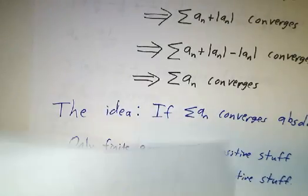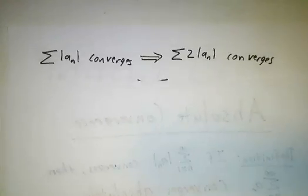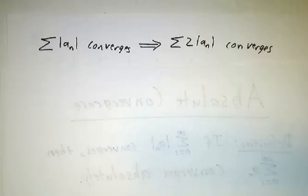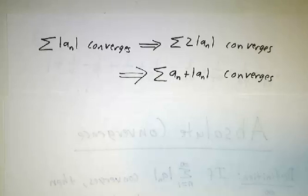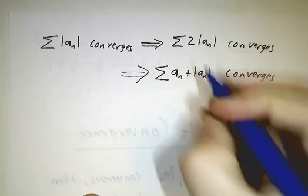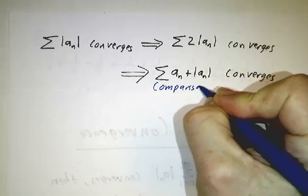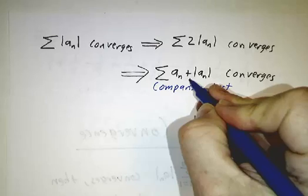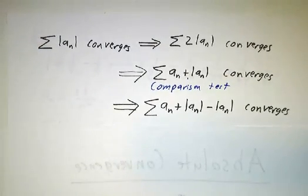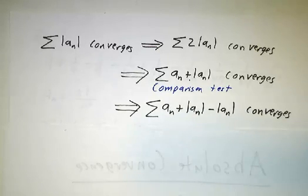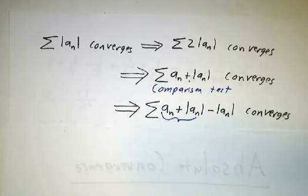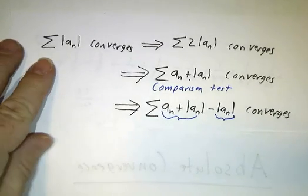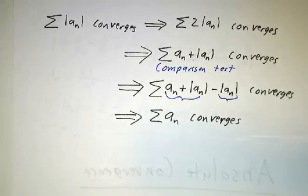Suppose that the sum of the absolute values converges. Well then, the sum of twice the absolute values has to converge, because that's just multiplying by 2. But then, the sum of an plus the absolute values converges by the comparison test — if you're smaller than a series that converges and you're a positive series, then you have to converge. And then an plus the absolute value minus the absolute value has to converge, because each part converges, and the difference of two convergent series is a convergent series. And of course, that's just an itself.